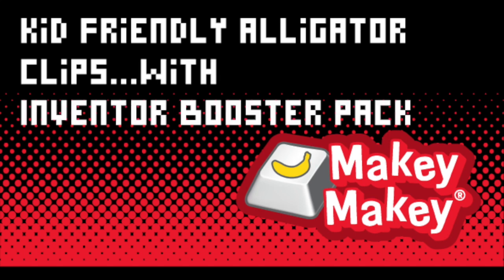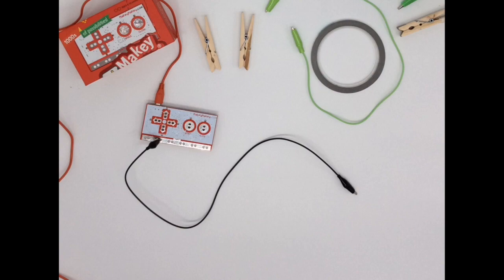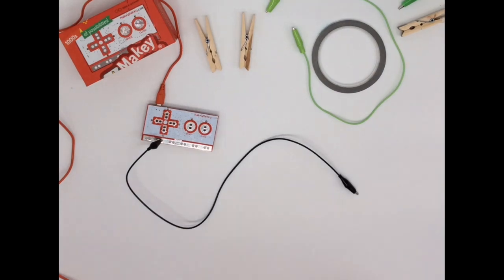To make kid-friendly alligator clips it's actually pretty simple. You just need a clothespin and some conductive fabric tape that we have in our Inventor Booster Kit.